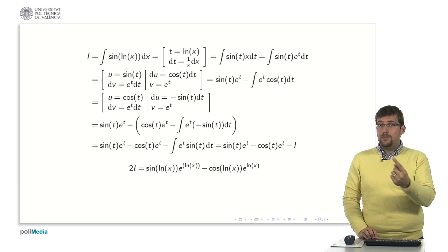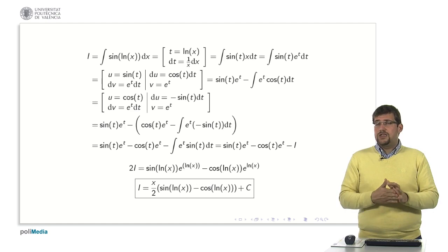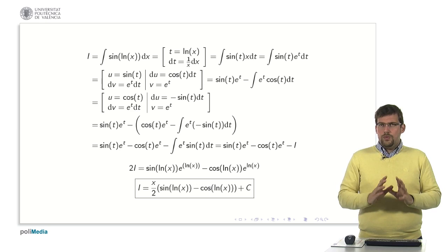And now we might ask ourselves how much is i worth? Well in order to know that i just have to pass the 2 dividing so the integral i would be that whole expression divided by 2. What happens here is a basic simplification. The sine of the logarithm stays as it is, the cosine of the logarithm stays as it is, but the exponential of the logarithm appears as x divided by 2. We can see it at the beginning of the expression.